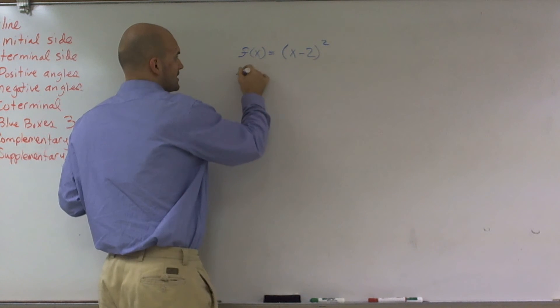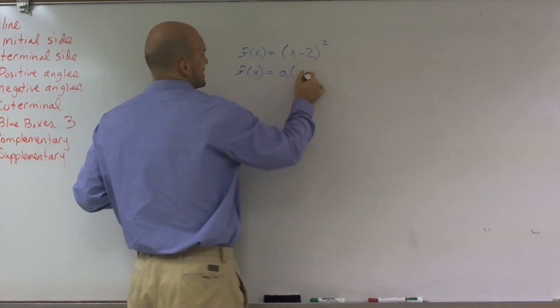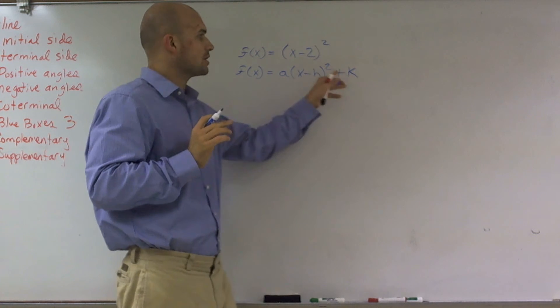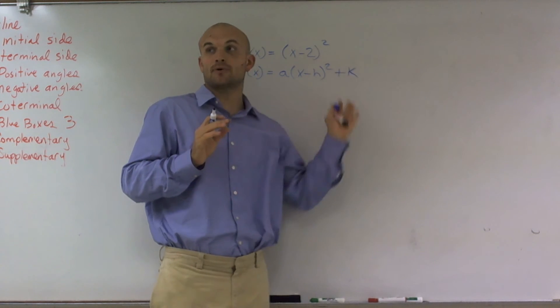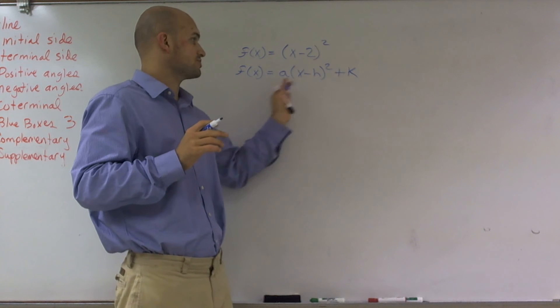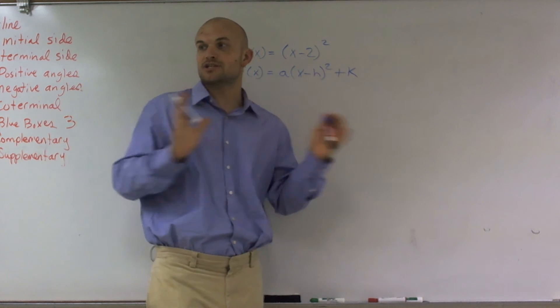In vertex form, though, I need to remember what vertex form is. And that's a times x minus h squared plus k. So a couple things we need to remember. Our k is going to tell us to shift up or down. Our h is going to tell us to shift to the right or shift to the left. And our a is going to tell us when we're going to do any kind of stretching or compressing.